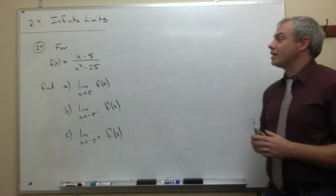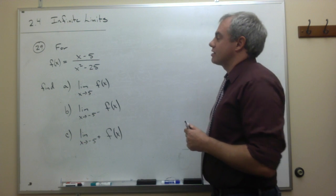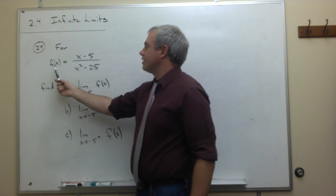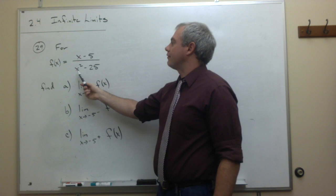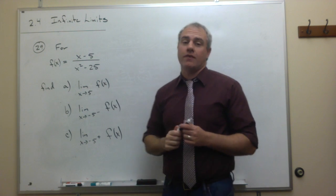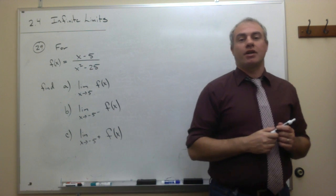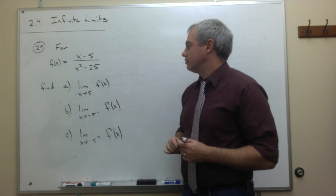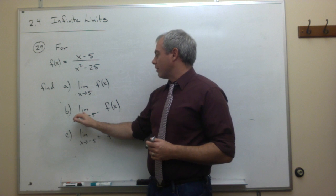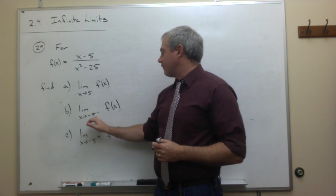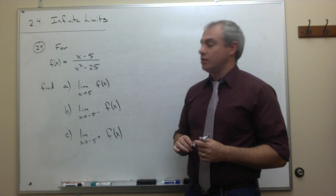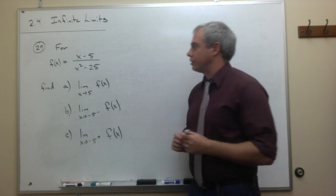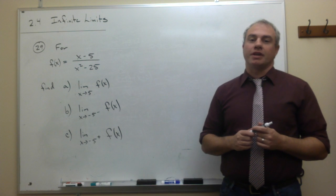In problem number 29, we're asked to figure out three different things dealing with the function f of x equals x minus 5 over x squared minus 25. What we're looking to do is find: first, the limit as x goes to 5 of the function; second, the limit as x goes to negative 5 from the left; and finally, the limit as x goes to minus 5 from the right.